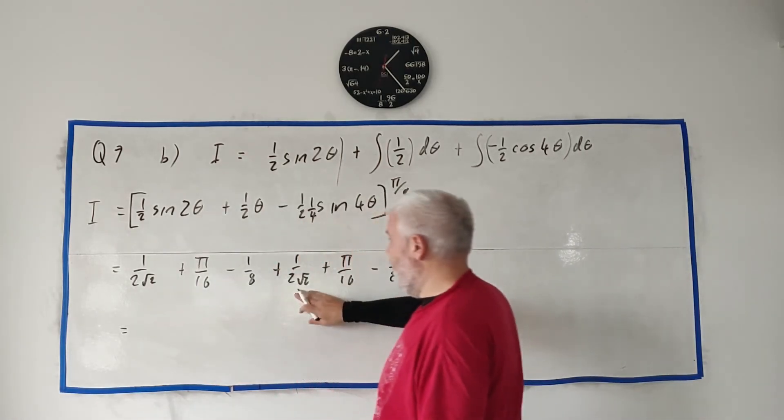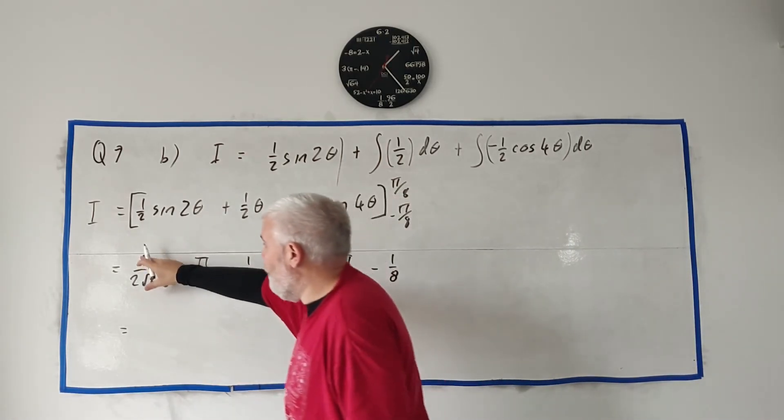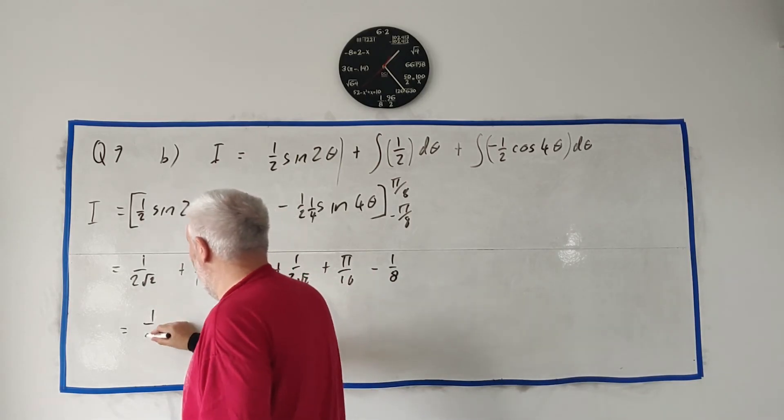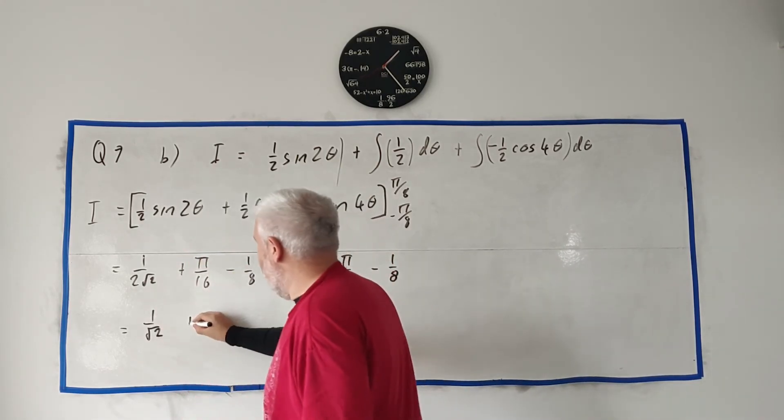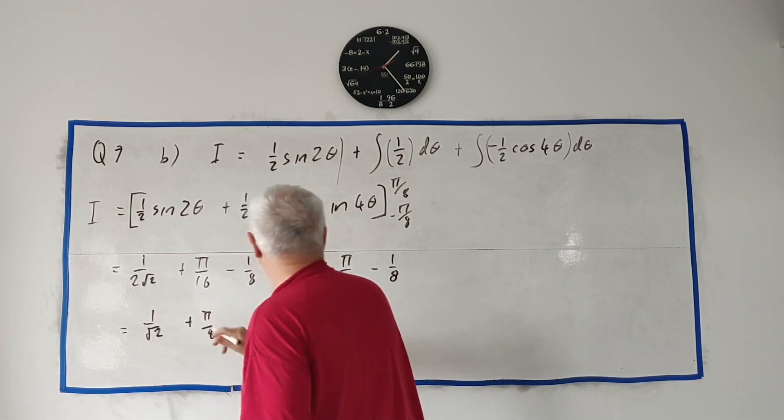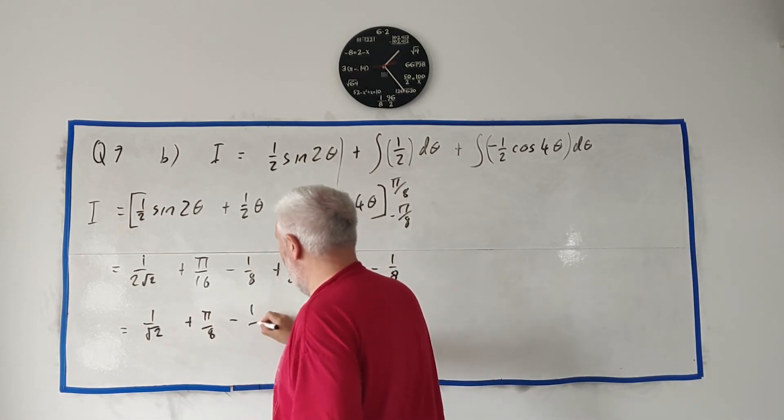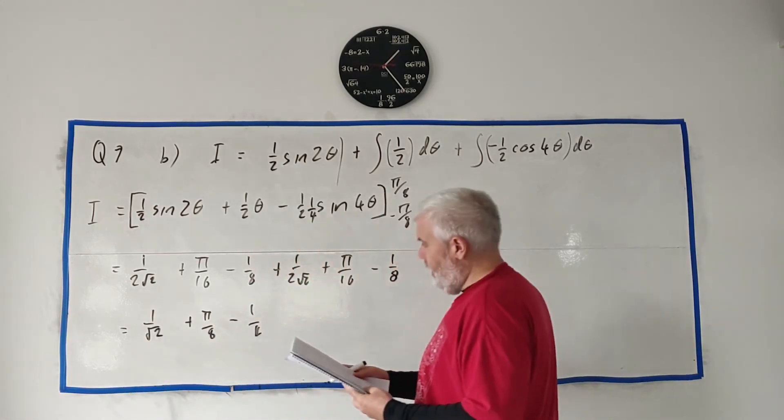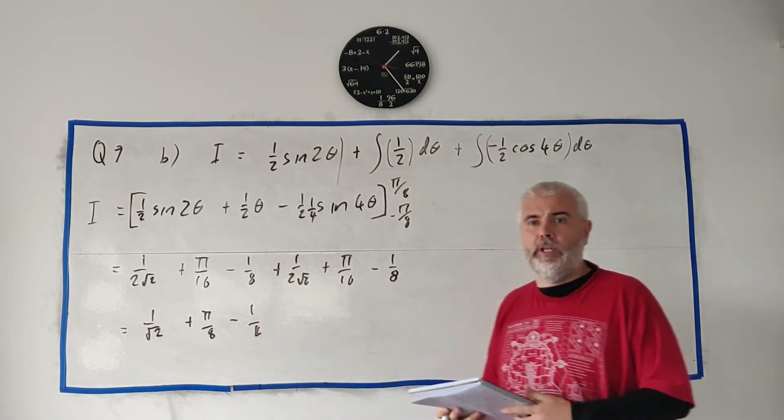So we add all these together. There's just 2 of all of them. So, for example, there's 2 of these. That's just a 2 on top here. Cancels down. We just have 1/√2. There's 2 of these, cancels in. We get π/8. And there's 2 of these. We get -1/4. And that's the final answer for part B.